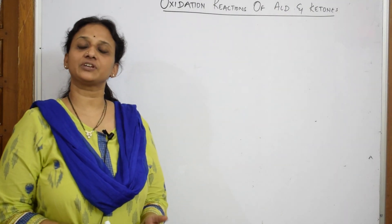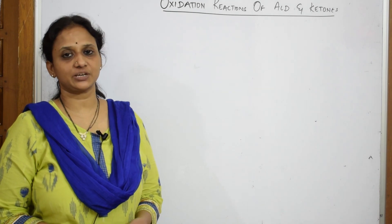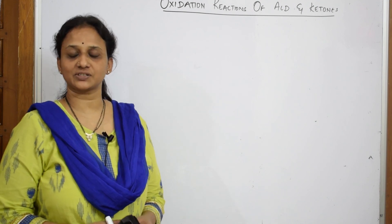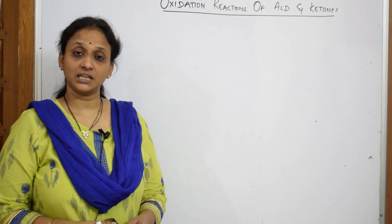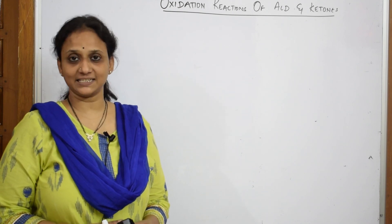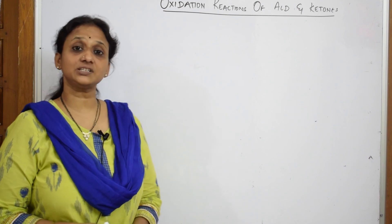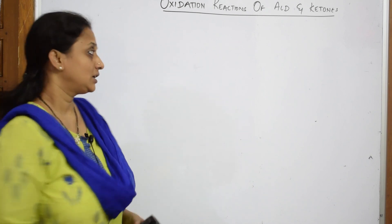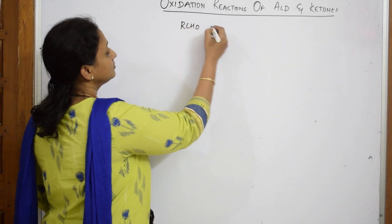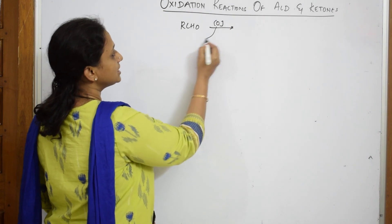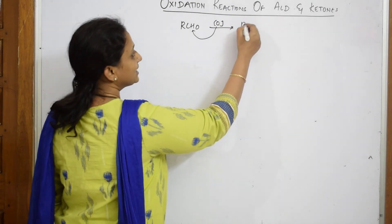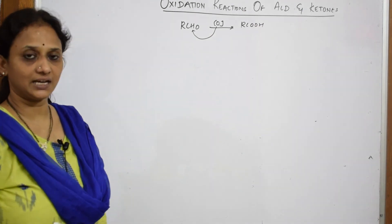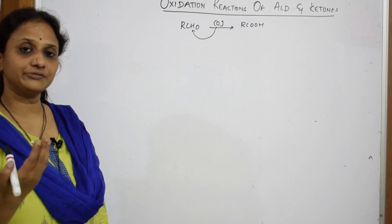Welcome back to one more session of your aldehydes, ketones and carboxylic acids chapter. Till now we've done many reactions in aldehydes and ketones — nucleophilic addition reactions, nucleophilic addition with loss of oxygen. Now we will learn the oxidation reactions of aldehydes and ketones. Aldehydes on oxidation — oxidation is addition of oxygen — gives us an acid. So aldehydes on oxidation give us acids.